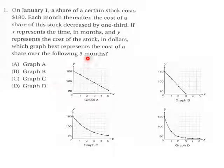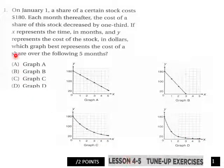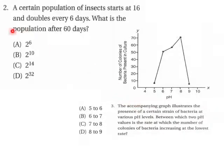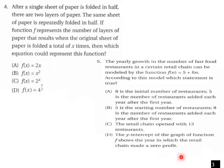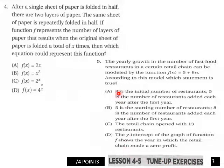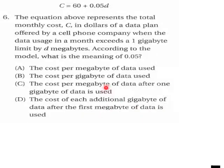Page 1 on our tune-up sheet for 4.5 is multiple choice for these graphs. Page 2 of our tune-up has four points — problem 2 and then problem 3, multiple choice. Page 3 of our 4.5 tune-up we have problems 4 and 5, multiple choice.